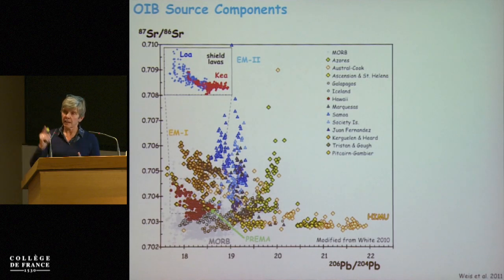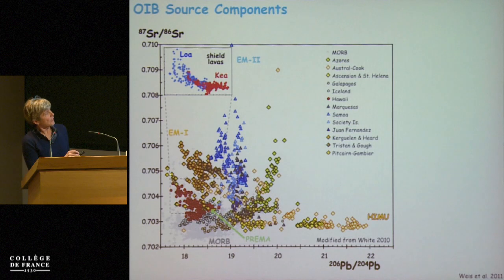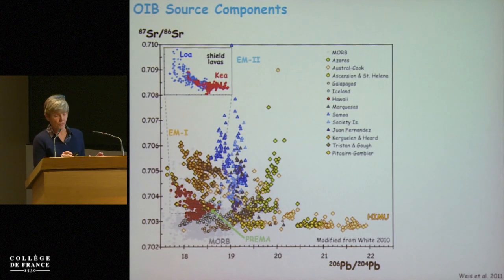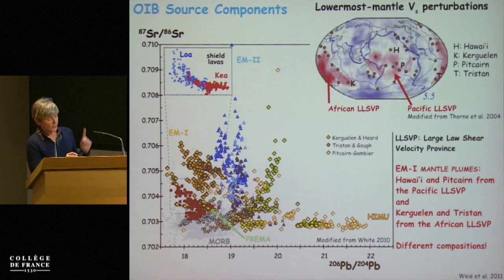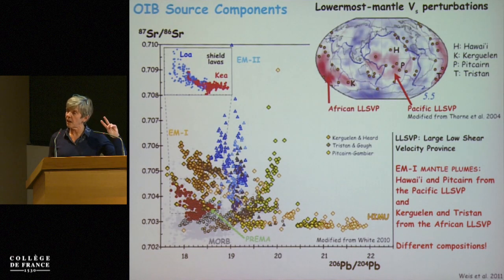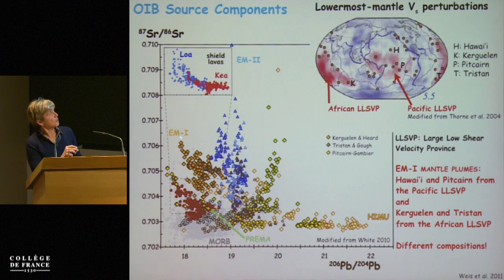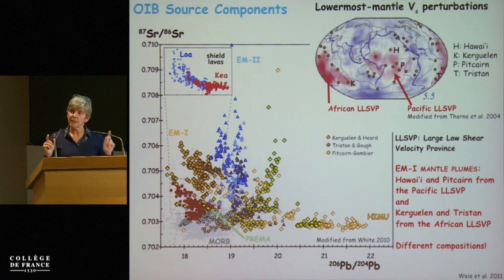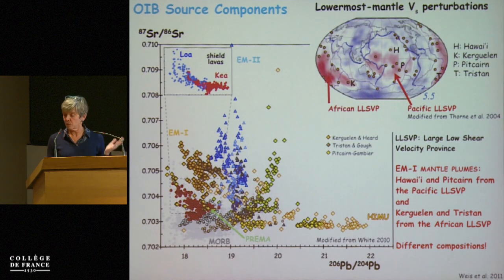One thing — and this connects to what Ann said. If we look at Hawaii, focusing only on shield lavas to compare apples with apples, the yellow diamonds here are Pitcairn. This trend represents the two hotspots above the Pacific LLSVP. This other trend is Kerguelen and Tristan at the extreme ends of the African LLSVP. So the interpretation I put forward is that these two LLSVPs have different isotopic signatures — different composition, and as a result, different isotopic signatures. I would also argue that they have different ages.